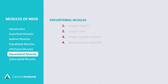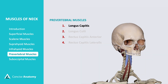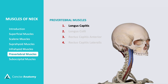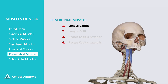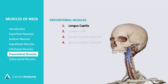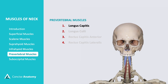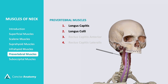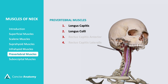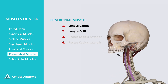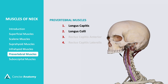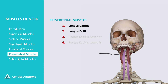The prevertebral muscles are deep neck muscles located in front of the cervical spine. Longus capitis runs from the cervical vertebrae to the base of the skull, aiding in head flexion and stabilizing the neck. Longus colli is a multi-part muscle extending along the front of the cervical spine, responsible for neck flexion, rotation, and maintaining cervical stability.